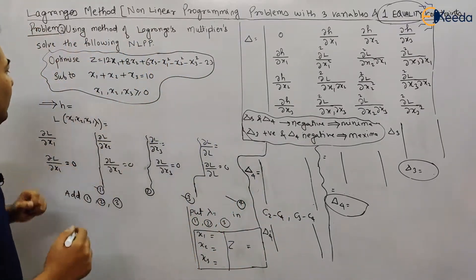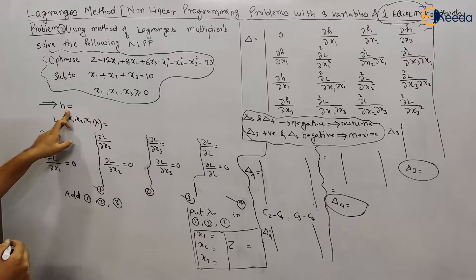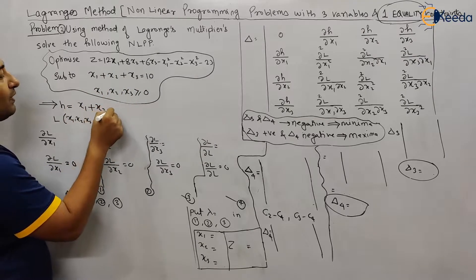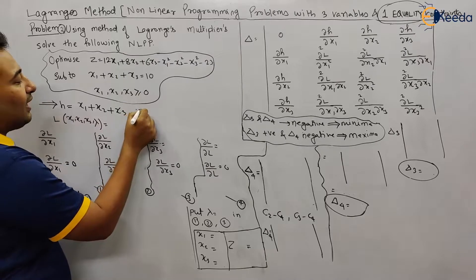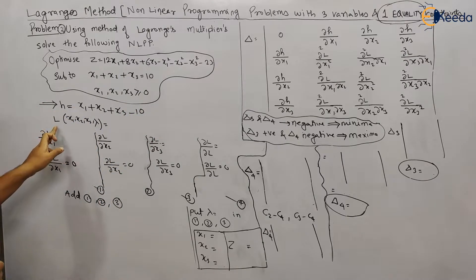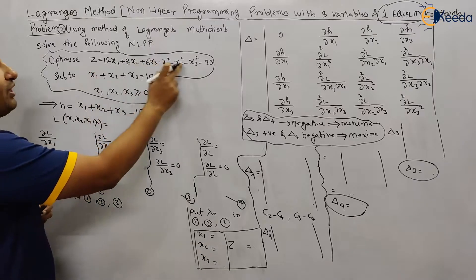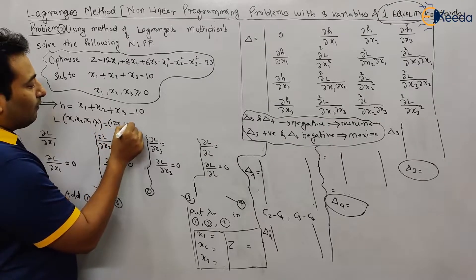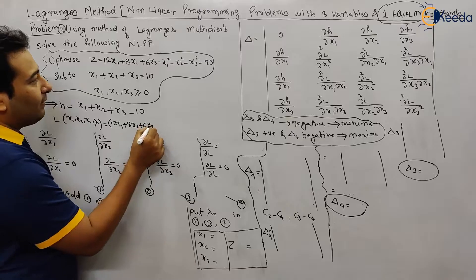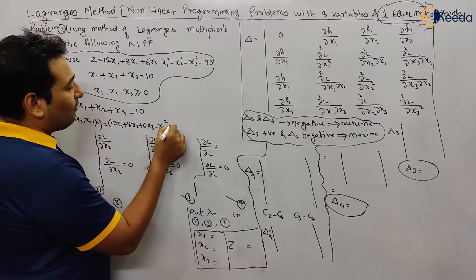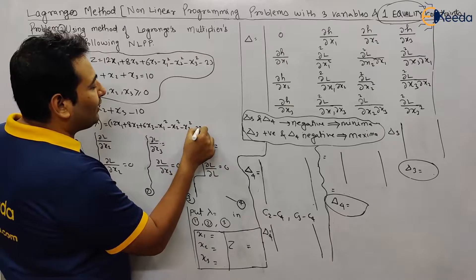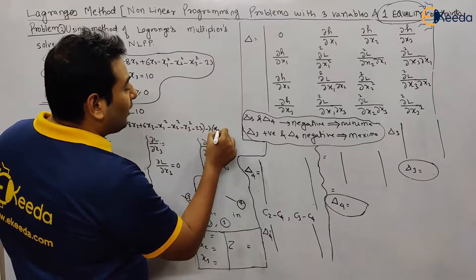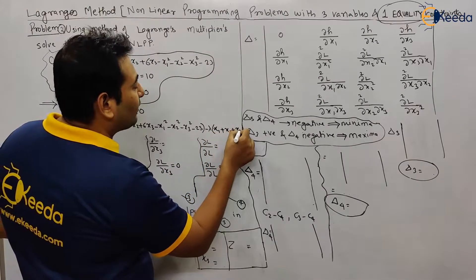Let us start. h is the constraint given in the problem. This will be x1 plus x2 plus x3, which moves to the other side and becomes minus 10. The Lagrange function is the objective function minus lambda times the constraint: 12x1 plus 8x2 plus 6x3 minus x1 squared minus x2 squared minus x3 squared minus 23, minus lambda times the constraint, which is x1 plus x2 plus x3 minus 10.